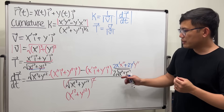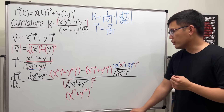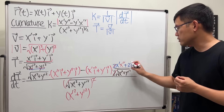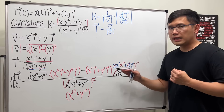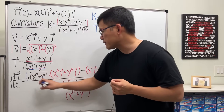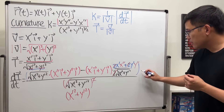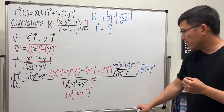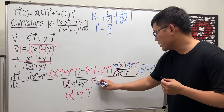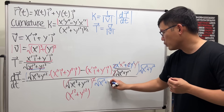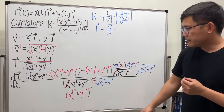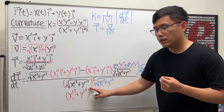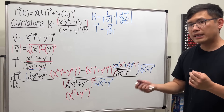Now we simplify. Notice we have a fraction on top — we can factor out the 2 on top and cancel with the 2 on the bottom. Then multiply the top and bottom by the square root of x-prime squared plus y-prime squared to eliminate the complex fraction. The denominator, originally to the one-half power, combines with this factor to give the three-halves power.